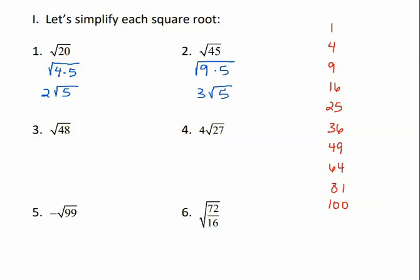For number 3, half of 48 would be 24. So the next perfect square to check is 16. Will 16 go into 48? Yes, it will. 16 times 3 is 48. The square root of 16 is 4, and the 3 stays under.